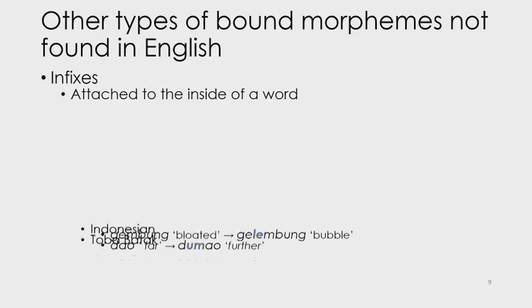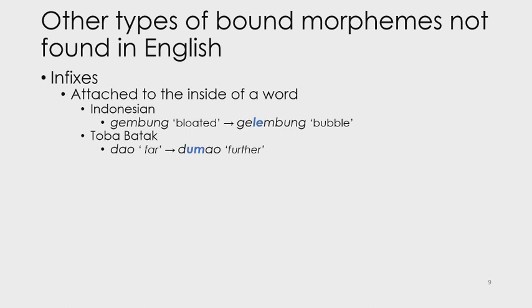There are also other types of interesting bound morphemes not found in English. We've got infixes — as the name suggests, infixes are attached to the inside of a word. In Indonesian, gembong means bloated, but when -el- is added, we derive gelembong, meaning bubble. In Toba Batak, another language spoken in Indonesia, dao means far, but when -ung- is added, we derive the word for further: daungao.